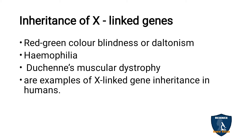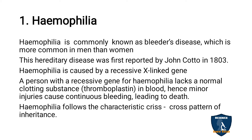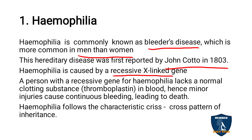Some examples of X-linked gene inheritance include red-green color blindness (daltonism), haemophilia, and Duchenne's muscular dystrophy. Haemophilia is otherwise known as bleeder's disease. It is more common in men than women, was first reported by John Otto in 1803, and is caused by a recessive X-linked gene.